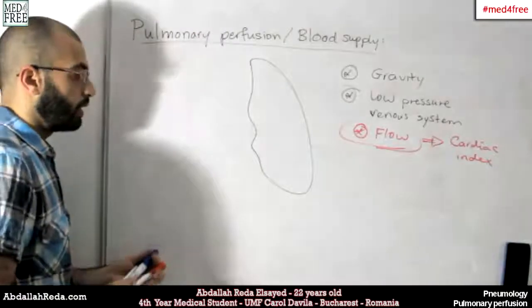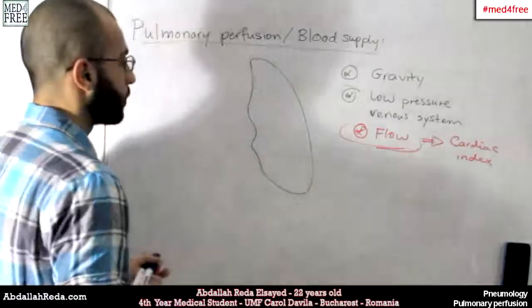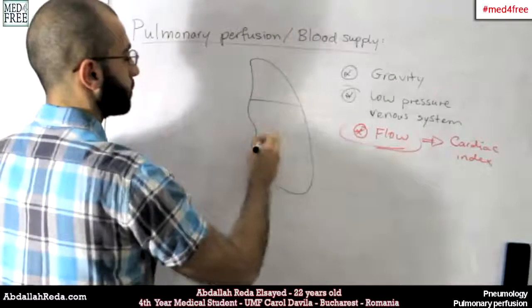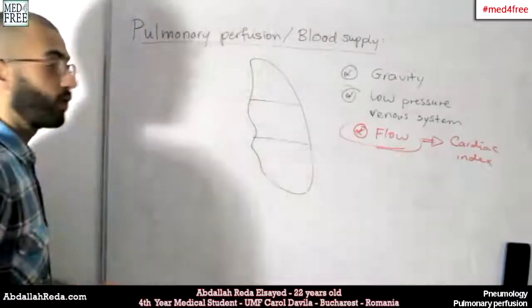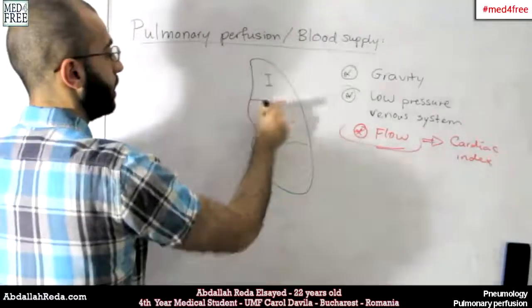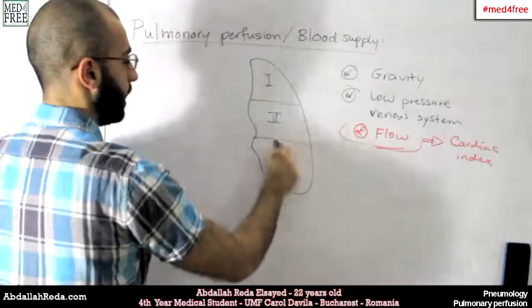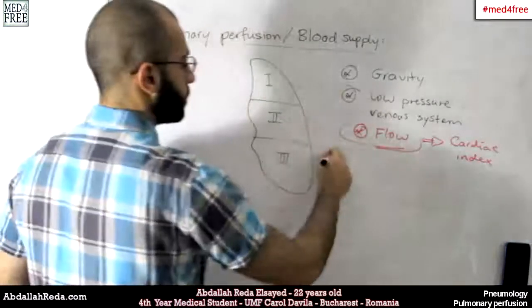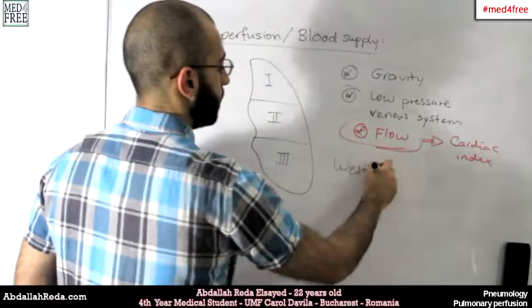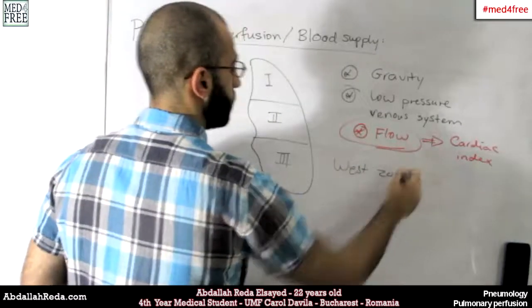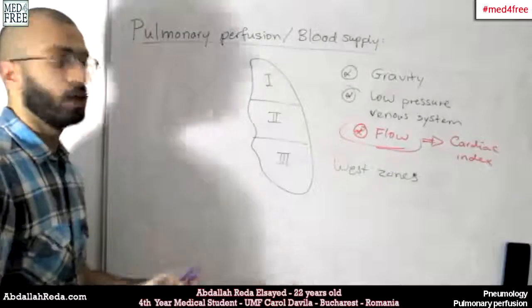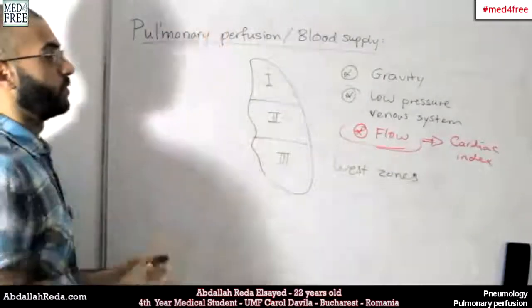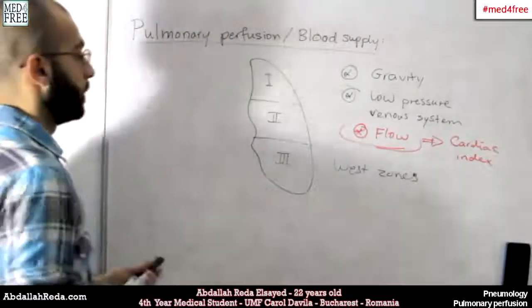From all of this, we can distribute the lung into three zones gravity-wise — zones one, two, and three. These three zones are called the West Zones, and they explain the differences in the perfusion of the lung.